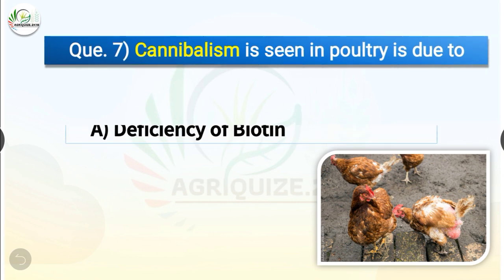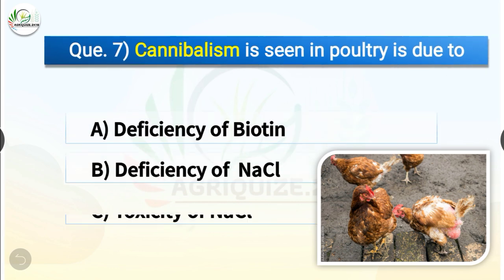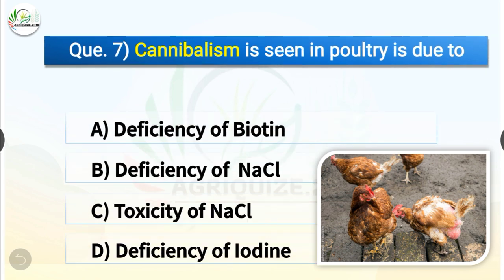Question number 7. Cannibalism is seen in poultry, which is due to — deficiency of biotin, deficiency of NaCl, toxicity of NaCl or deficiency of iodine. The correct answer is option B, deficiency of NaCl. So cannibalism is seen in poultry which is due to deficiency of NaCl.